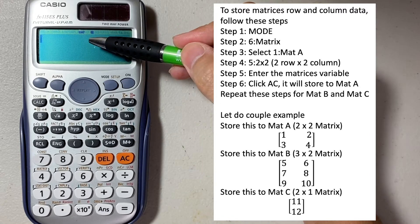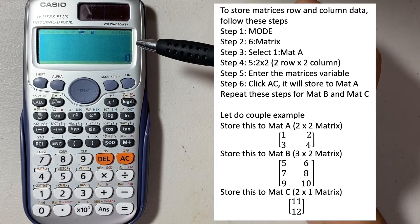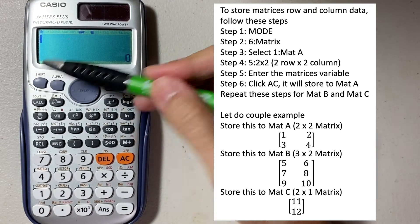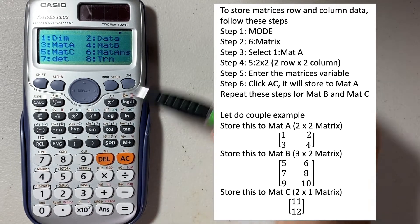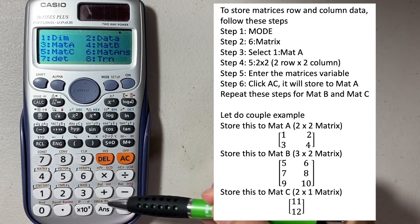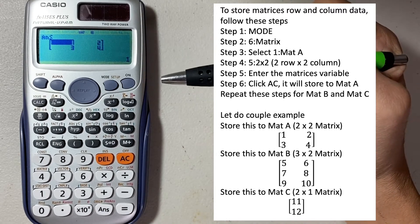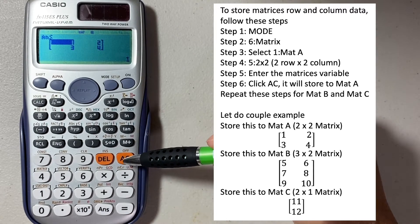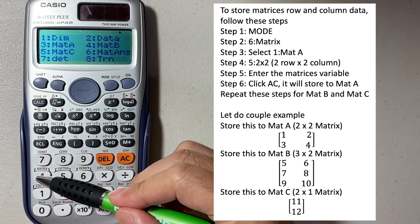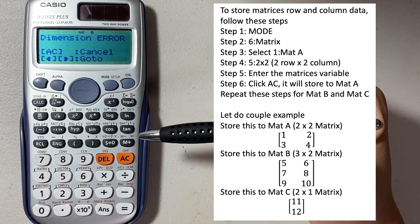On the top, you can see MAT, which means we have a matrix stored in the calculator. To retrieve the data, simply go to shift, number 4, and here you can see we stored in number 3 — select 3 and click enter. Here you go — you have matrix A, which is a 2x2. If you try to retrieve matrix B, which we haven't stored anything in yet, you're going to get an error because there's nothing stored in B or C at the moment.